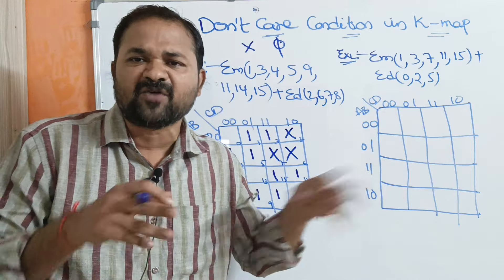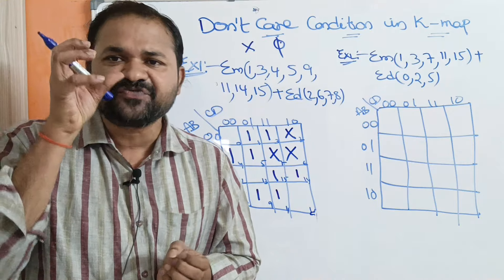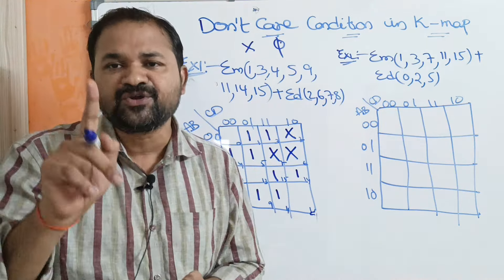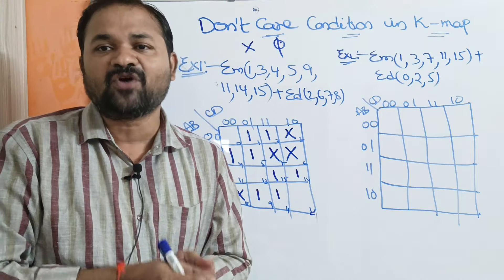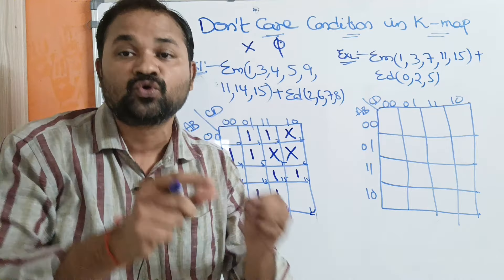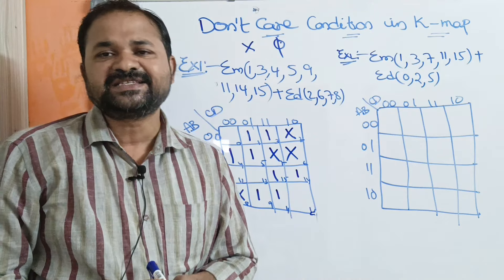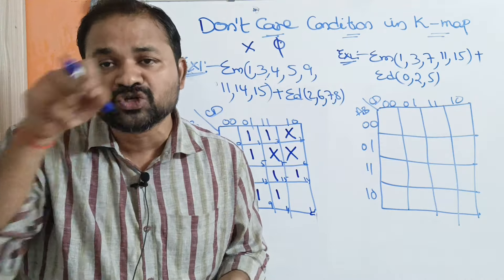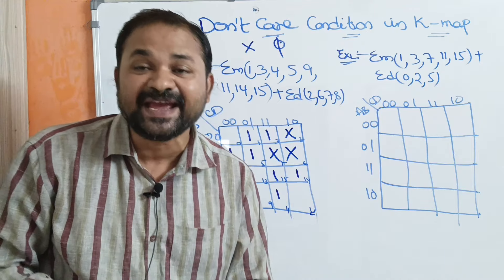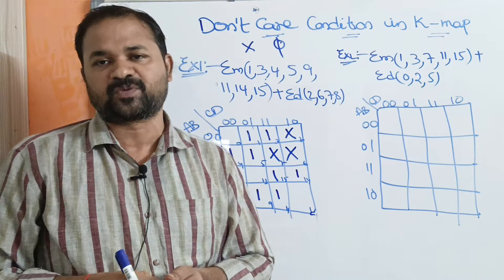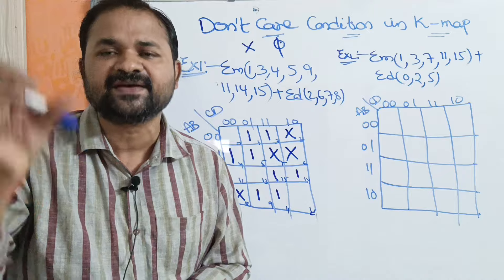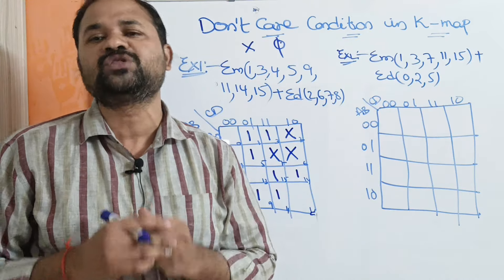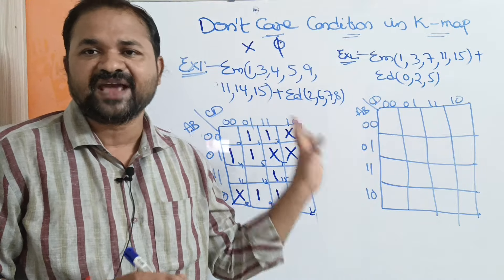We have to search for the group which contains 16 cells. Suppose we have 15 ones and one don't care — if we include the don't care, we can make all 16 cells as a group. Or suppose we have a group of 6 ones and 2 don't cares — if we include those 2 don't cares, 6 plus 2 becomes 8, and we can make those 8 cells as one group. It is our choice. It is not necessary to include all the don't cares, but we have to include all the ones — we have to cover all the ones.